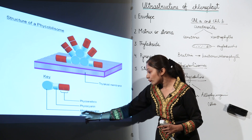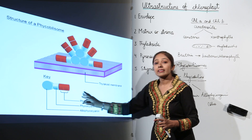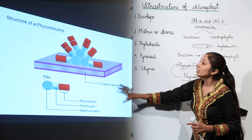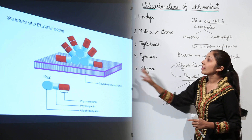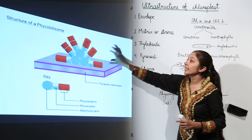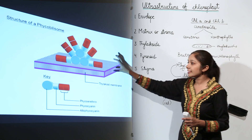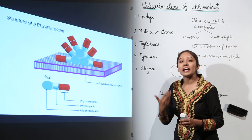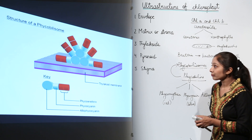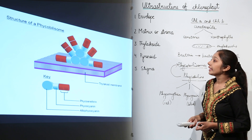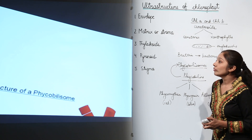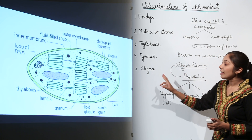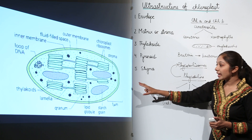Phycocyanin is of blue color. This is the structure of a phycobiliosome — this is a dichromatic representation of a phycobiliosome.